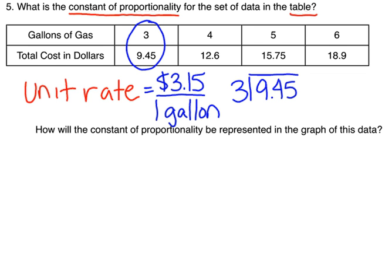Then it says, how will the constant of proportionality be represented in the graph? The constant of proportionality is always shown in the graph through the slope. And we're going to be specific and say what the slope is. Since we already know the unit rate, the slope is going to match. So we're going to have a slope of 3.15.